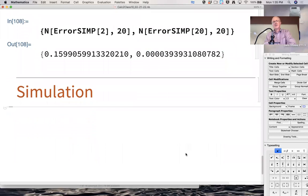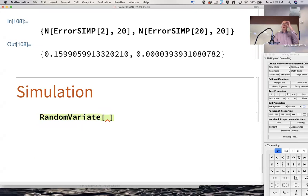And you can simulate in Mathematica in various ways. One way is with something called a random variate. And what I'd like to show you is a little simulation with something called a normal distribution, a bell-shaped curve.